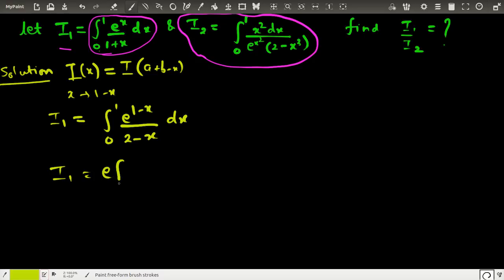Since e is constant, I can take it outside. This is the integral from 0 to 1 of e^(-x)/(2-x), which becomes e/(e^x(2-x)).